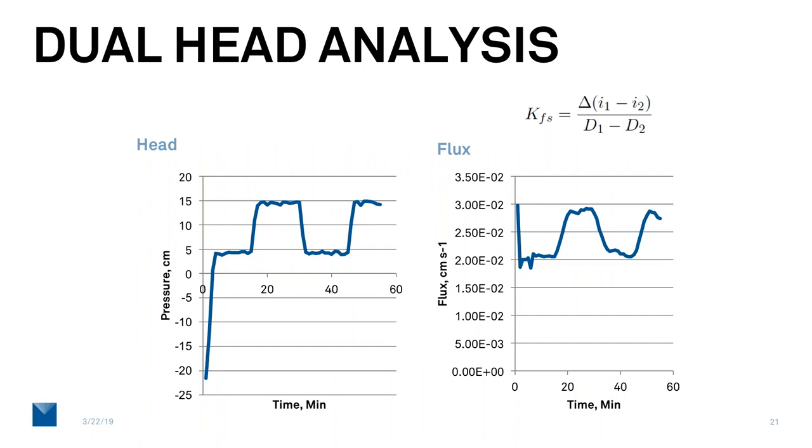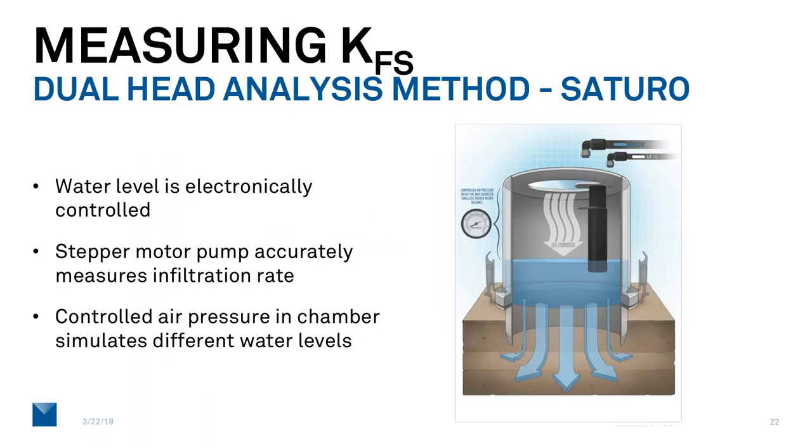So to give you an idea of how that analysis is done, I have on the left here the pressures that we establish, the two different pressures. And we do this, in the past that's been done by filling the ring to a greater depth or a lesser depth, but what we do is apply air pressure so that we can go quickly from one to the other and so that we can do that automatically. And then on the right is the flux. You can see the two infiltration values. We supply the water, control the water at a constant level, and supply water with a pump that can measure that infiltration rate, the water control rate. You can see the two depths that we have, and so we combine those to get the hydraulic conductivity.